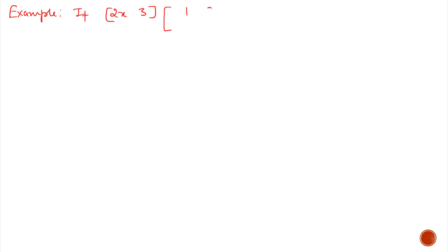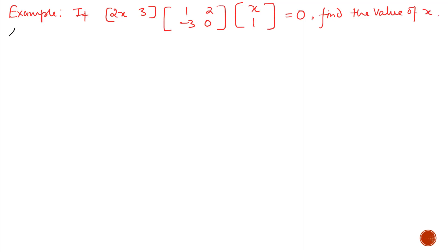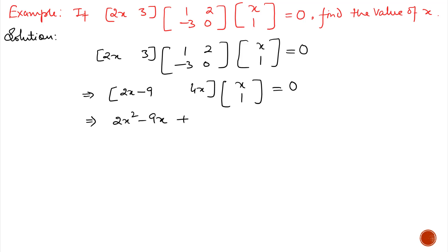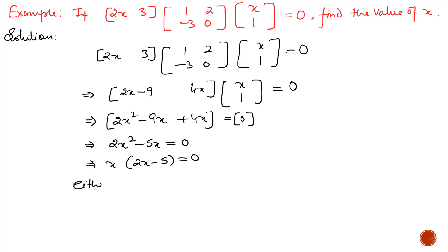Last example: a 1×2 row matrix multiplied by a 2×1 column matrix equals a 1×1 matrix. After setting up the multiplication: 2x·2 + 3·0 and applying the row-by-column rule, the expression simplifies to 2x² − 5x = 0. Taking x common: x(2x − 5) = 0. So either x = 0 or 2x − 5 = 0, which gives x = 5/2.